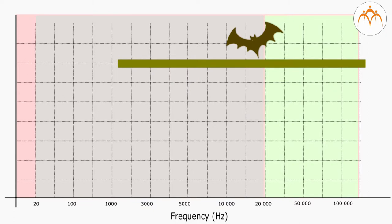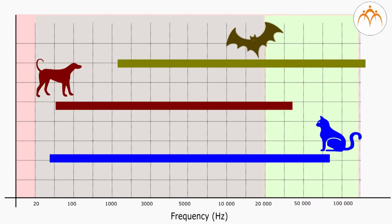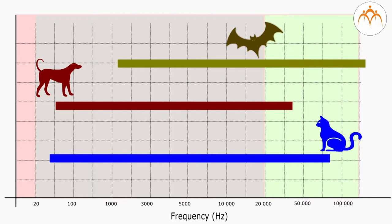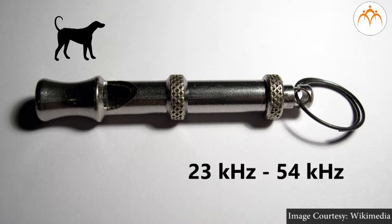Animals such as bats use ultrasound for locating prey and obstacles. Dogs and cats' hearing range extends into the ultrasound. A dog whistle is a whistle that emits ultrasound used for training and calling dogs. The frequency of most dog whistles is within the range of 23 to 54 kHz.